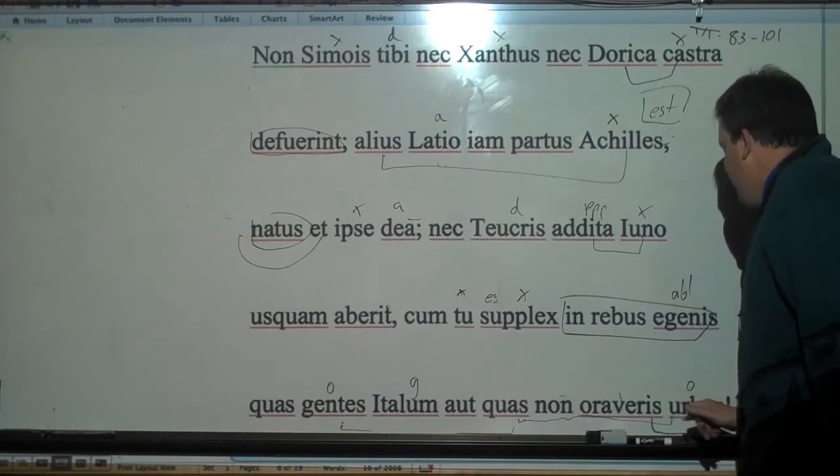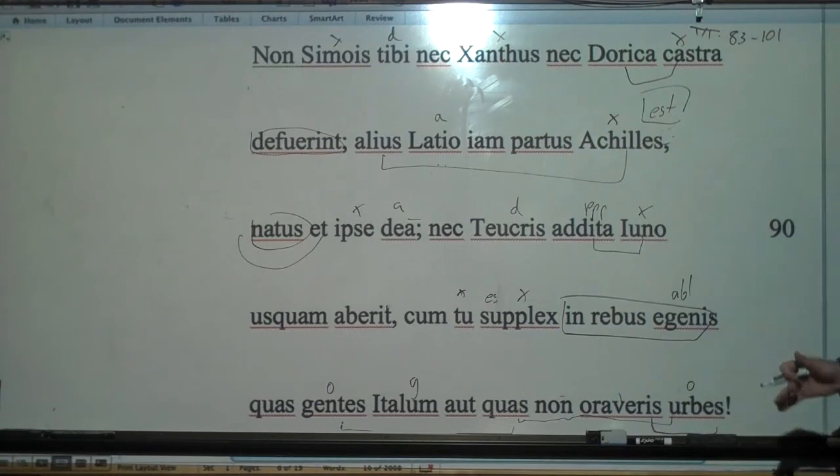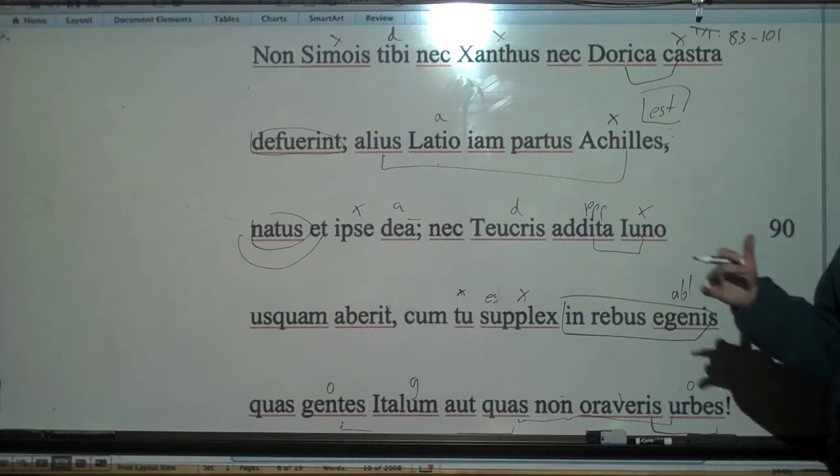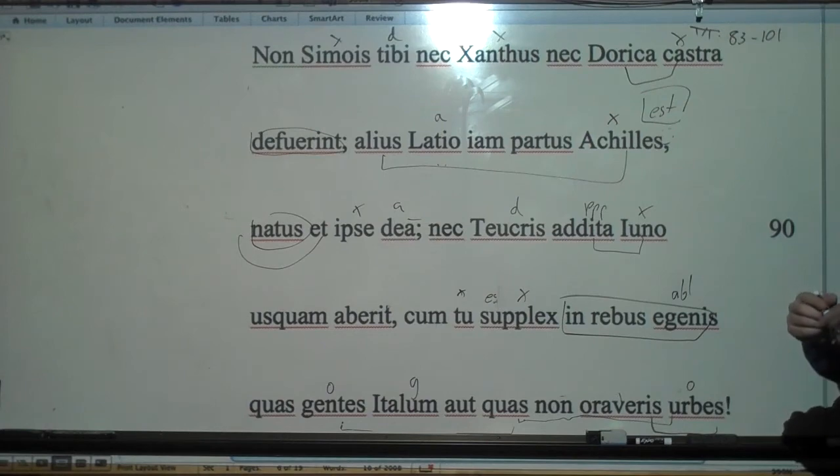This is our verb, future perfect - you will have begged. So when you are a supplicant in needy things, when you're in need, what peoples of Italy or what cities will you not have begged? So you're going to be going around asking for help, there's going to be another Trojan War, you're in deep trouble.